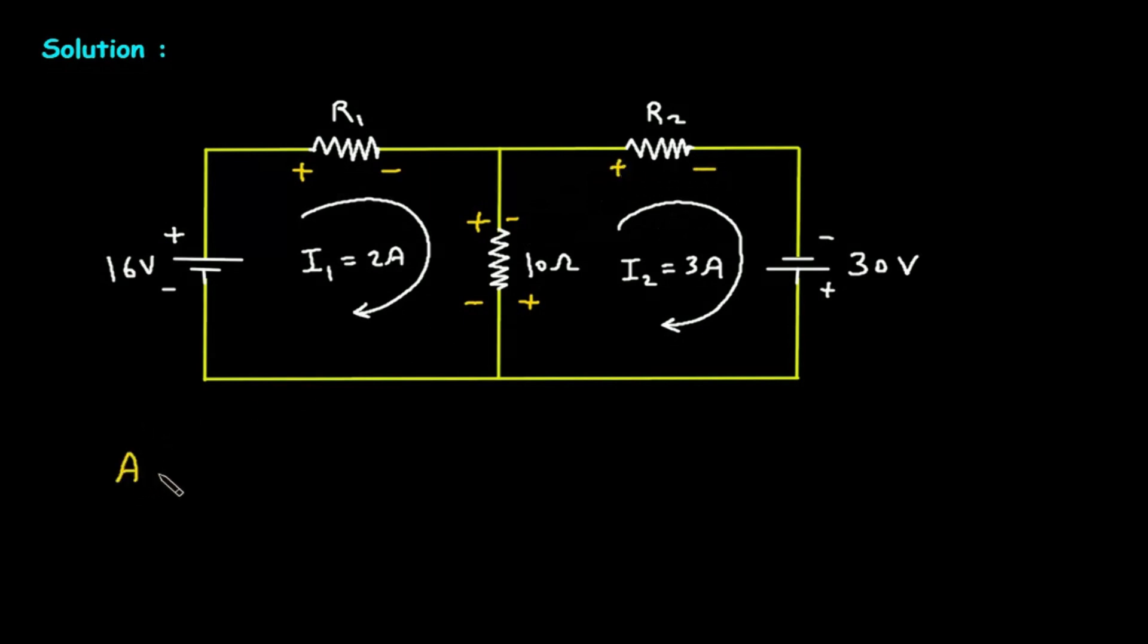Now we will apply KVL to mesh number 1. Here we will apply KVL, that is Kirchhoff's voltage law. We will start from here. So this will be minus 16,